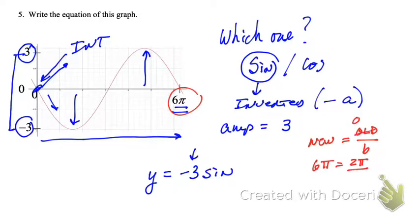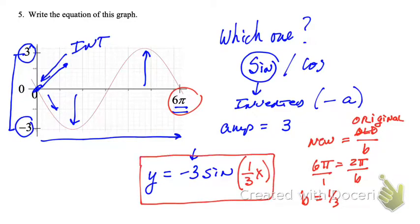Shouldn't have used old, should have said original, divided by B. And then you can put that over top of 1 and cross multiply, and you get B to be 1 third. So that means we have negative 3 times the sine of 1 third X would have been our equation.